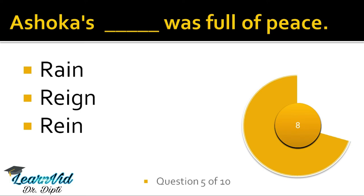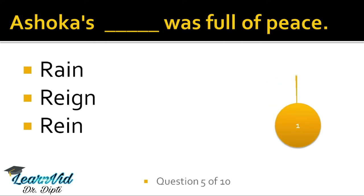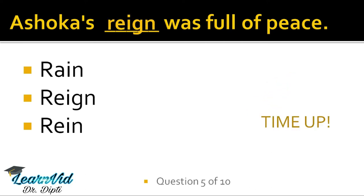Ashoka's dash was full of peace. The correct option is R-E-I-G-N — in this, G is silent, and we pronounce it as rain. Now the first option, R-A-I-N, we know means baarish. Second is R-E-I-G-N, which means to rule — raj karna or saashan karna. And R-E-I-N means lagam lagana — to control something — like rein a horse.